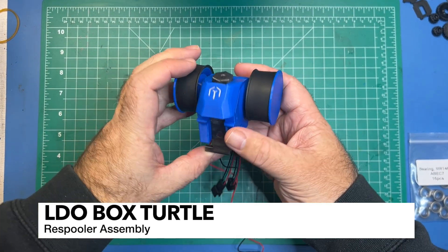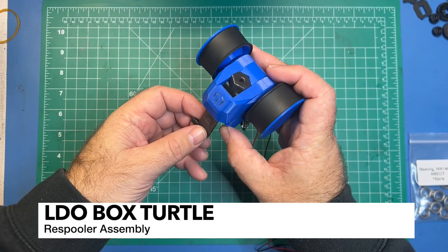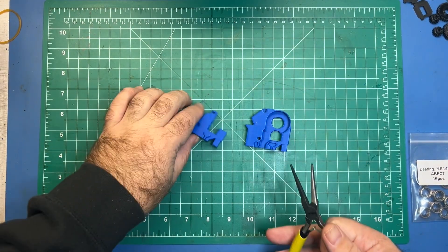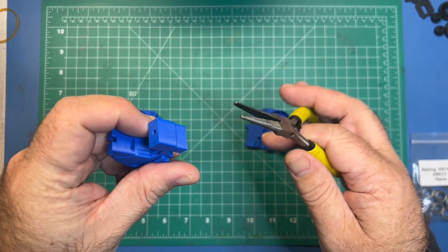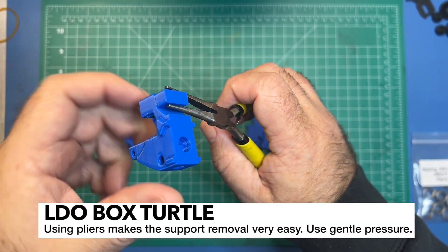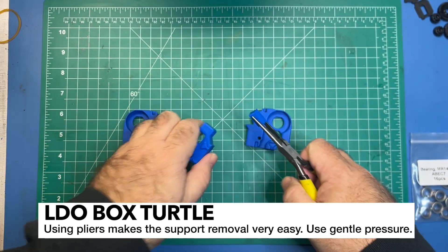In this video I'm going to be walking through how to build the Box Turtle Respooler. For the first step you're going to need the frame right and left as well as the motor mount, and we're just going to take our pliers here and break off these supports. You can see the little line there that should come right off just like that.